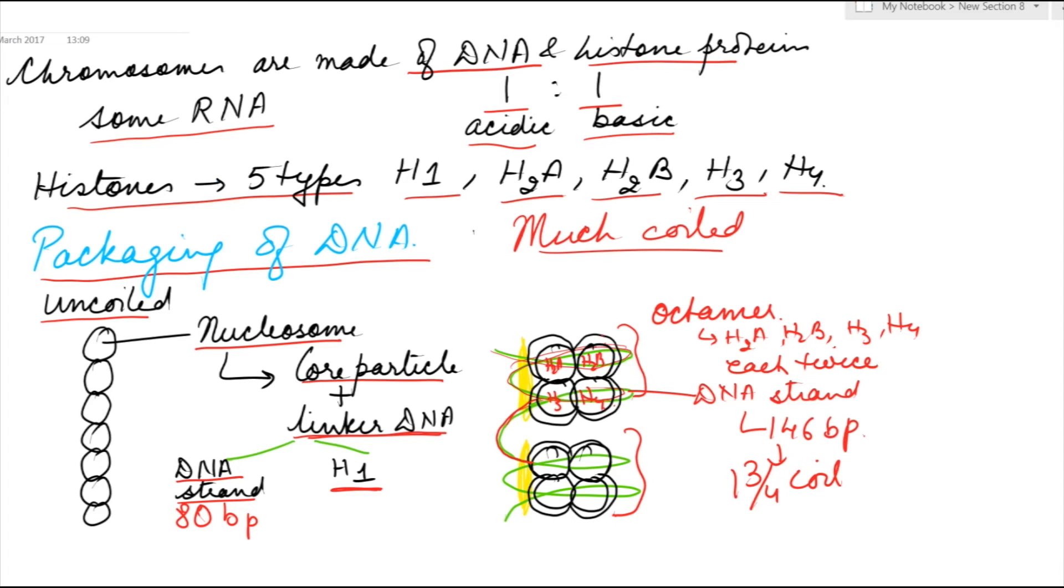The DNA strand completes the second coil around the octamer, while the H1 histone protein stabilizes the two coils around the octamer.